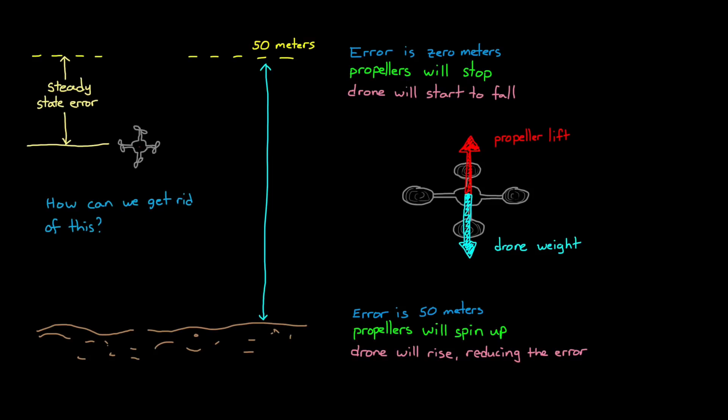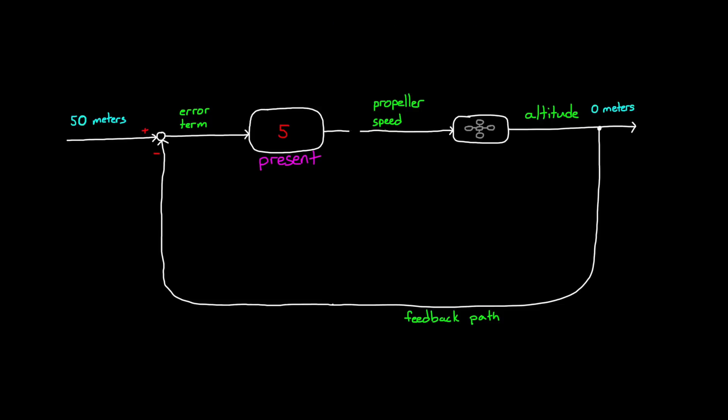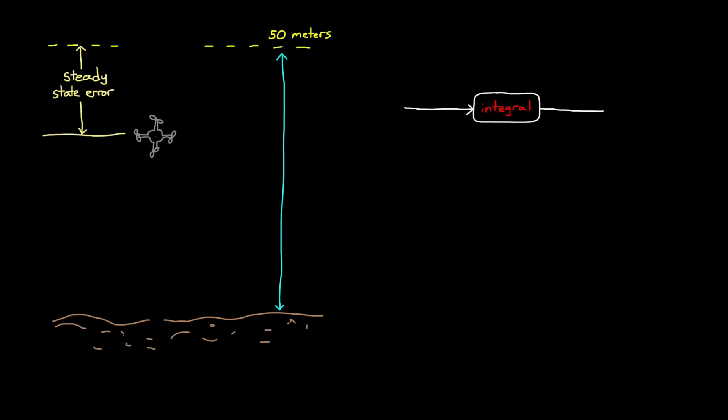So how can we tweak our controller to get rid of this steady state error? We can do that by letting our controller use past information, or specifically adding an integrator path in our controller that's added alongside the proportional path. An integrator sums up the input signal over time, keeping a running total. Therefore it has this memory of what has happened before. Basically, it's keeping track of the past. Now if the drone gets to steady state below the desired altitude, the error term is non-zero. And when a non-zero value is integrated, the output will increase. And this increased value from the integrator path will increase the speed of the propellers, and the drone will continue to rise.